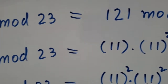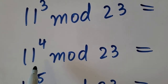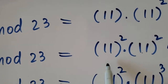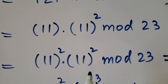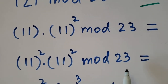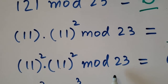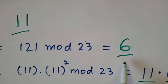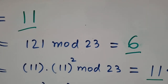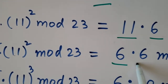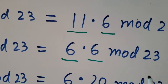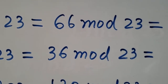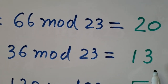Now we calculate 11 to the power 4 mod 23, which is the combination of 11 squared times 11 squared mod 23. 11 squared we already calculated as 6, so 6 times 6 mod 23 is 36 mod 23, which is 13.